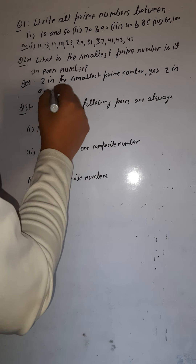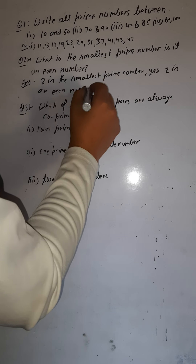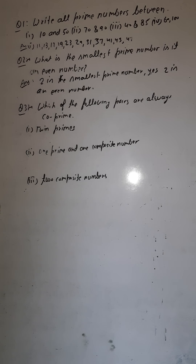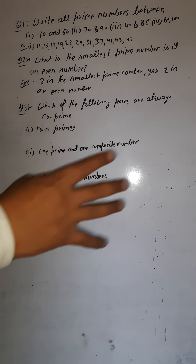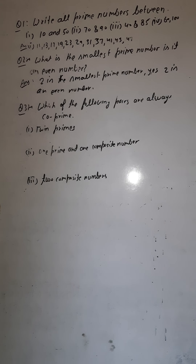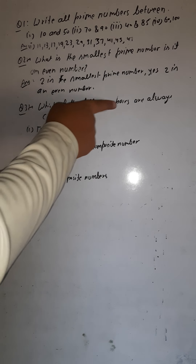This implies that two is an even prime number. Two is the only number which is even as well as prime. The rest of the even numbers are not prime numbers — only two is the even number which is also a prime number.